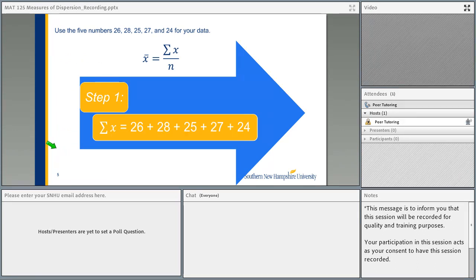So we're going to look at this example. Use the five numbers 26, 28, 25, 27, and 24 for your data. Step one, we are going to figure out what the average is for all of those numbers. So again, just to review from last time, if you have a chance to listen to the recording for the module two, I would highly recommend it. So this symbol here again, so x with that horizontal bar over it, that is the mean.